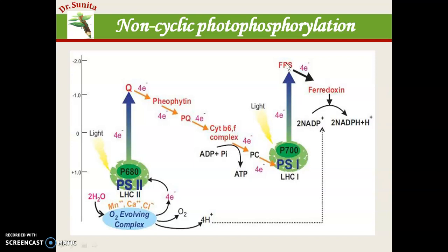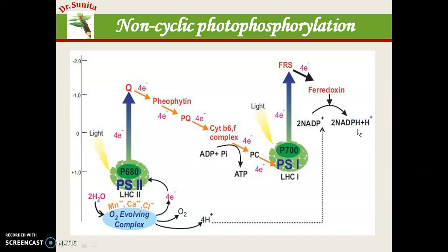Photosystem 1 transfers electrons to FRS (ferredoxin-reducing substance) and then to ferredoxin, causing the reduction of 2 NADP+ into 2 NADPH. H+ ions produced during photolysis of water help in the reduction of NADP+ to NADPH. So in non-cyclic photophosphorylation, both ATP is synthesized and NADP+ is reduced to NADPH, meaning assimilatory power is also synthesized in this reaction.